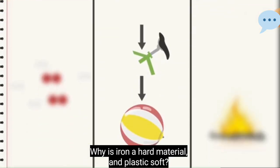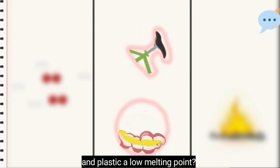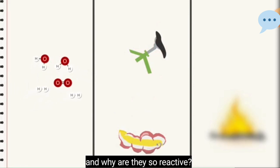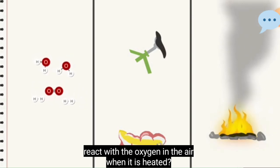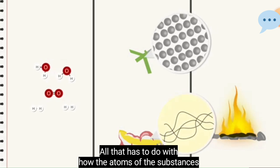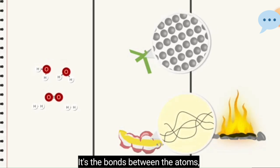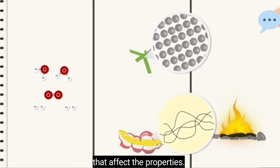Why is iron a hard material and plastic soft? Why do iron and stone have high melting points and plastic a low melting point? Why are hydrogen and oxygen gases at room temperature and why are they so reactive? And why does the beach ball, but not the stones react with the oxygen in the air when it is heated? All that has to do with how the atoms of the substances are attached to each other. It's the bonds between the atoms and the strength of those bonds that affect the properties.